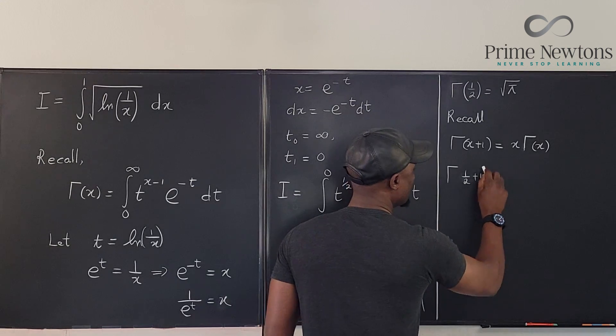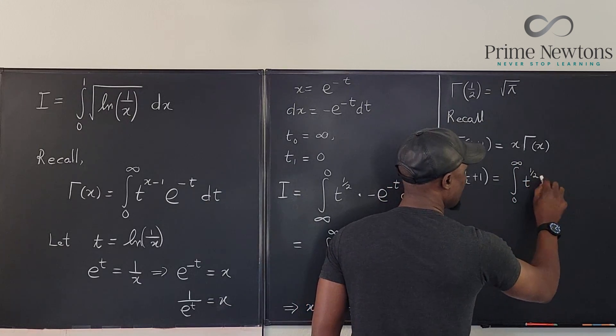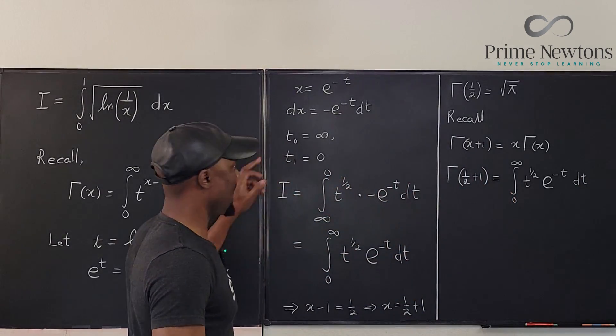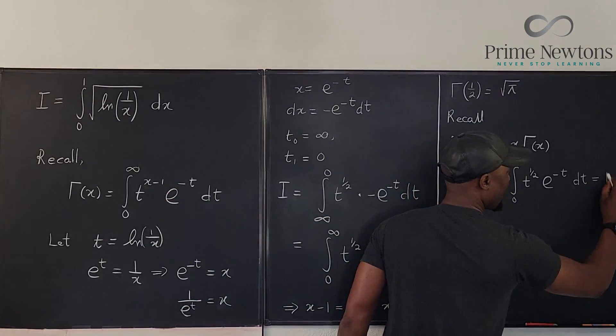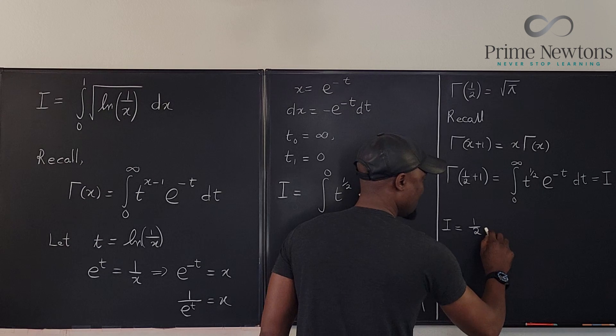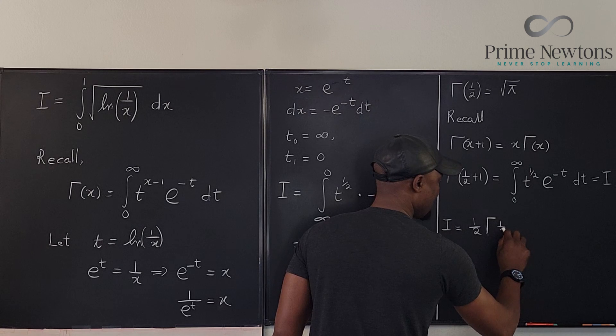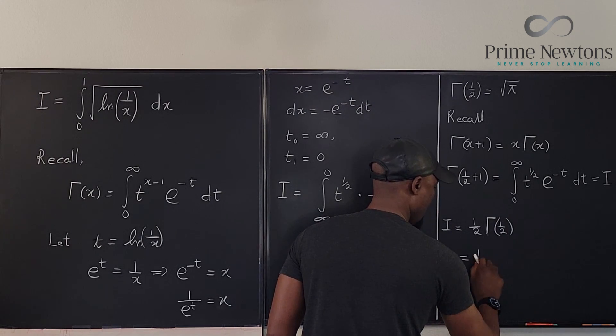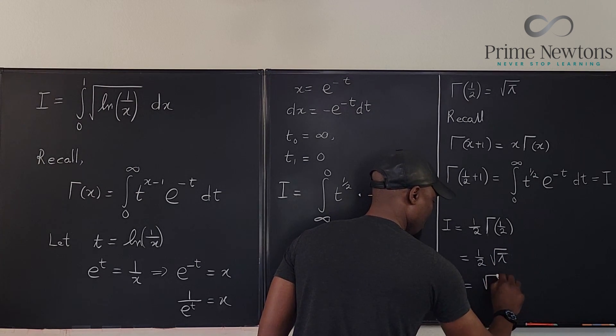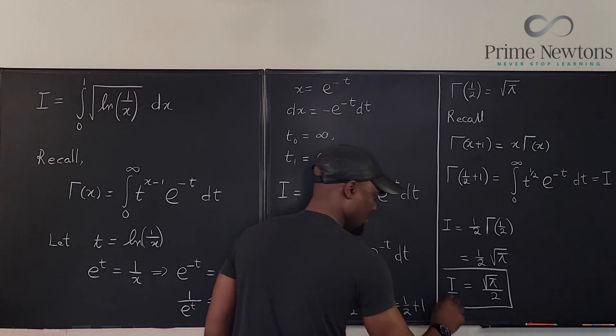So we know that the gamma of 1 half plus 1 is this integral that we have here, 0 to infinity of t to the 1 half e to the negative t dt. So what we're looking for, that's what we call our i. So basically i is 1 half times the gamma of 1 half which is equal to 1 half times the square root of pi which is equal to the square root of pi over 2. That is the integral that we're supposed to evaluate.